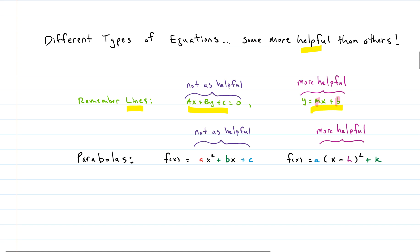With parabolas, the same idea applies. The general form isn't the most helpful — you can tell from the 'a' whether it opens up or down, but that's about it. The vertex form we're dealing with today is much more helpful because you can literally read off the vertex: h gives you the x-coordinate and k gives you the y-coordinate.